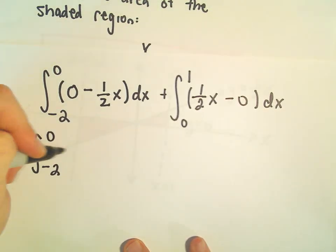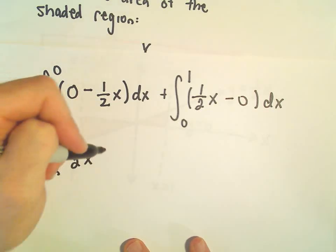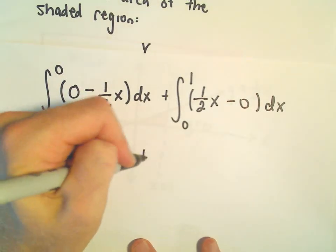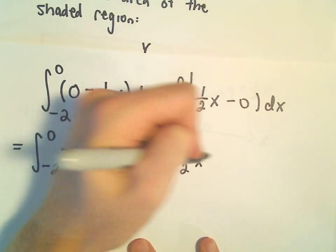All right, well, this is just negative 2 to 0 of negative 1 half x dx, and then from 0 to 1 of 1 half x dx.